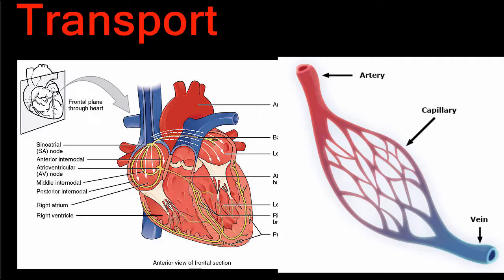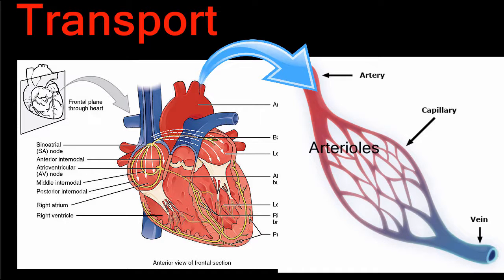There are three types of blood vessels: arteries, capillaries, and veins. Arteries carry blood away from the heart. Arteries branch off repeatedly, becoming smaller. Then they are called arterioles.